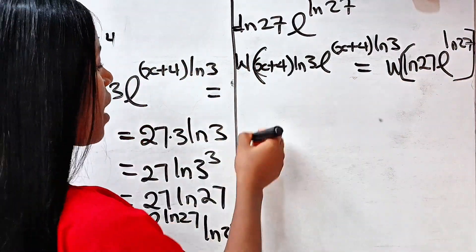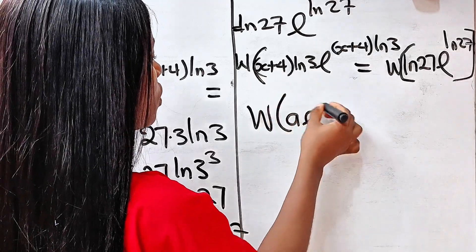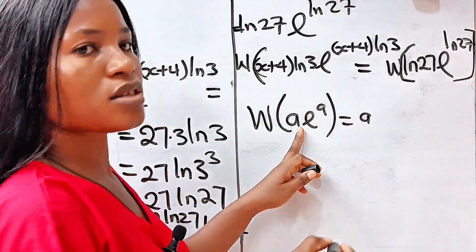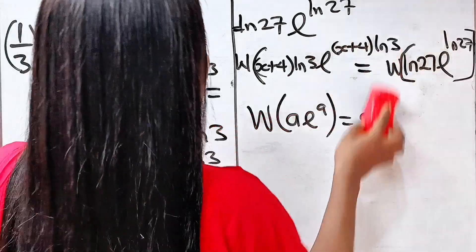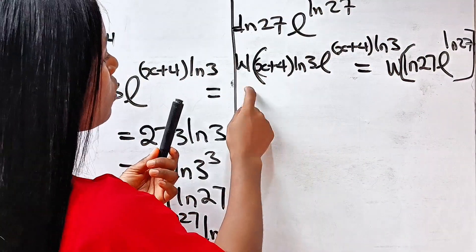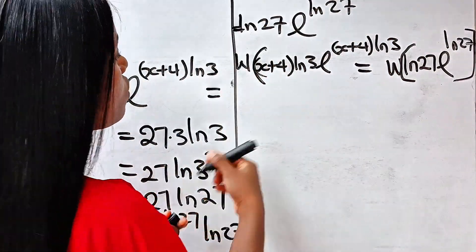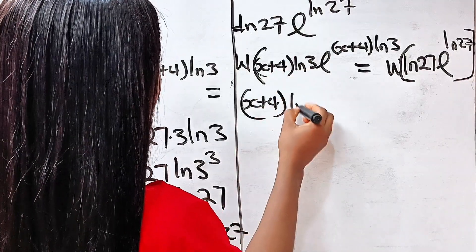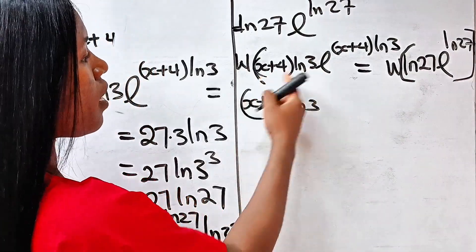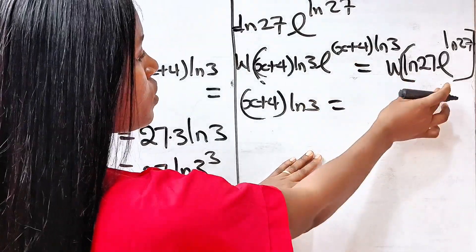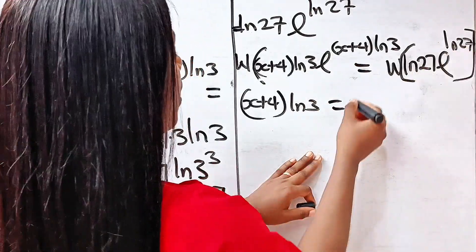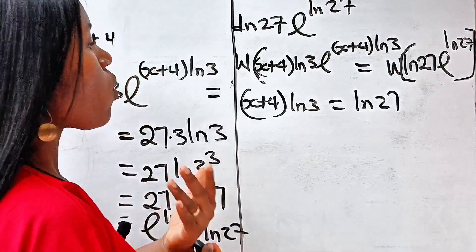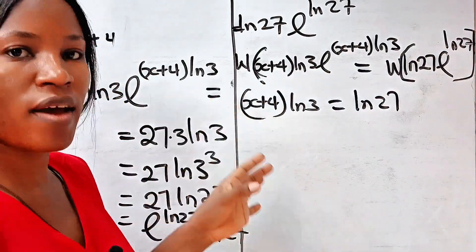When we apply the Lambert W function to something in that form, we extract the coefficient as the solution. So the left-hand side gives us (x + 4)·ln 3, and the right-hand side gives us ln 27.